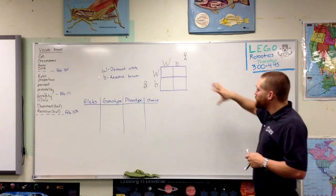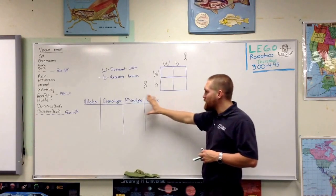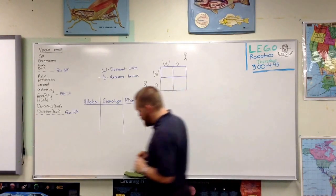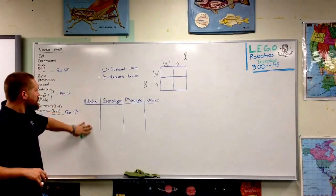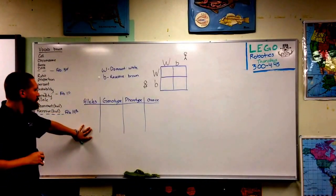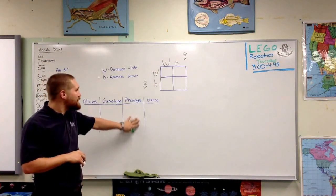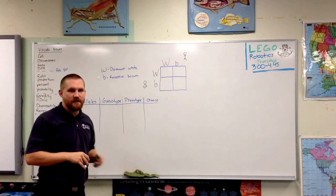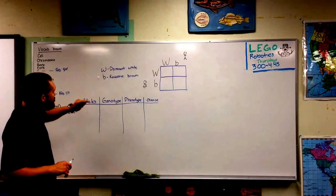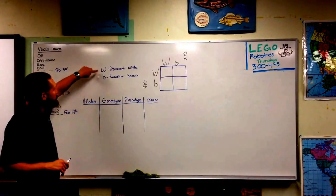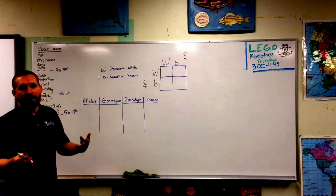Before I even fill this out, I can figure out some of this table. This table is going to tell us what are the different combinations of alleles, what's the genotype for that, what is the phenotype, and what's the chance of getting that result. We know that our alleles are a capital W and a lowercase b, so we can write down all the different combinations.